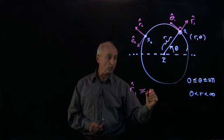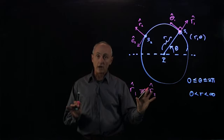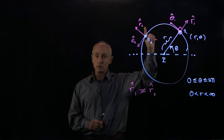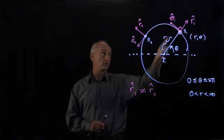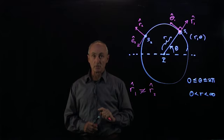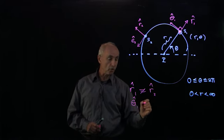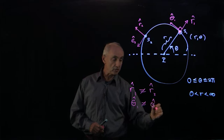r hat 1 is not equal to r hat 2. Why are they not equal? They both are unit vectors, so they both have the same magnitude, but they point in opposite directions. In the same way, theta hat 1 is not equal to theta hat 2.